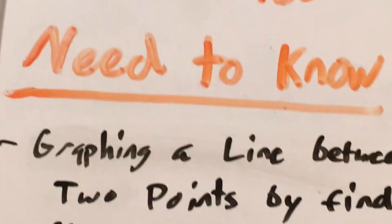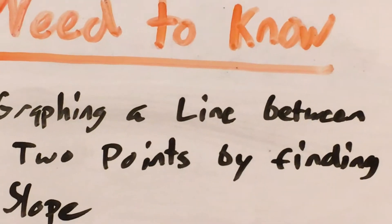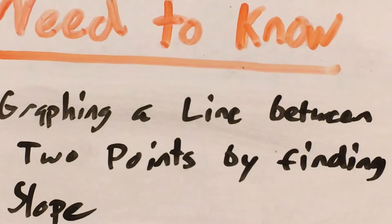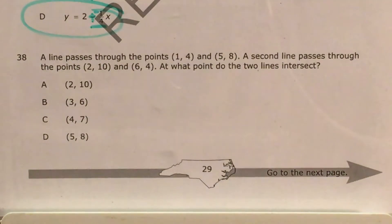So to do a question like this you'll need to know how to graph a line between two points, and to do it precisely you'll need to find your slope first. So we will go over how to find each of these, but for now I'm going to use the magic of editing to pull up my graphing whiteboard.